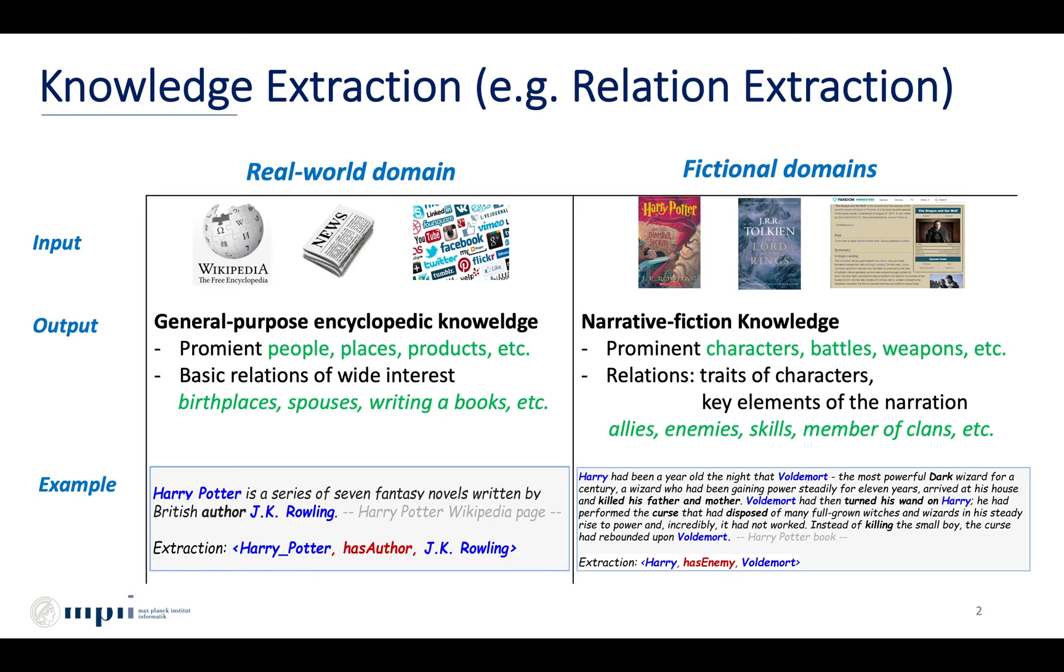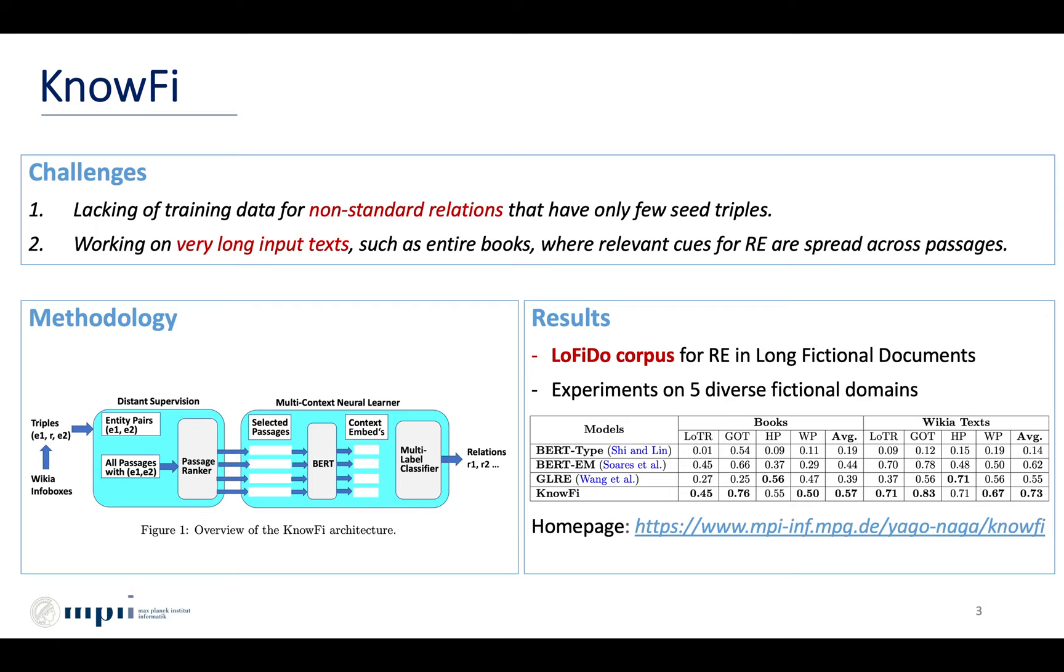In fictional domains, on the other hand, we're more interested in narrative fiction knowledge that relates to prominent characters and places with relations that capture traits of characters and key elements of the narration such as allies, enemies, skills, and so on.